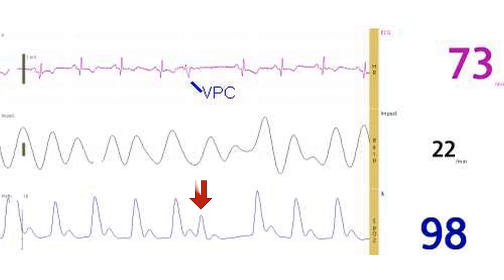The pulse oximetry tracing of ventricular premature complex shows a lower amplitude corresponding to a lower pulse wave amplitude for a premature beat.